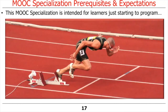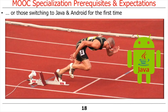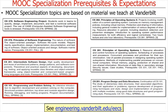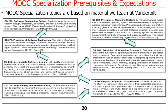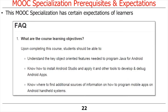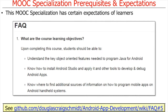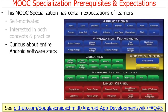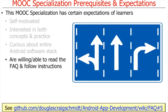This MOOC specialization is intended for learners who are just starting to program, as well as those switching to Java and Android for the first time. Topics are based on material we teach to undergrad students at Vanderbilt University. One challenge of teaching MOOCs is we don't know what you know. This MOOC is intended for self-motivated learners interested in both the concepts and practice of developing mobile apps, curious about the Android platform at the API level, and willing to read and follow the instructions in the MOOC assignments and announcements.